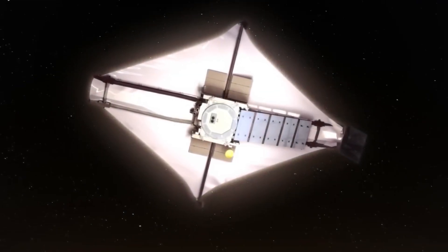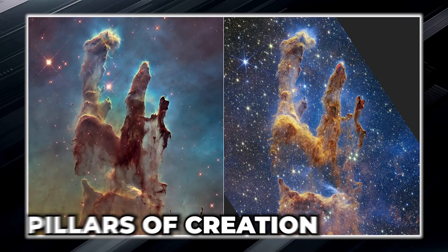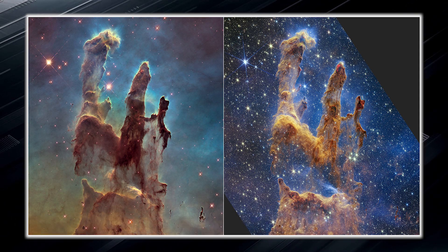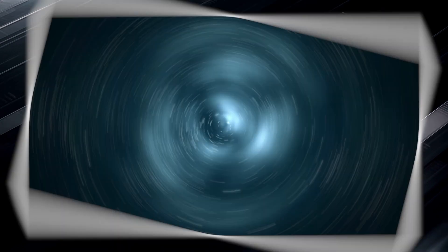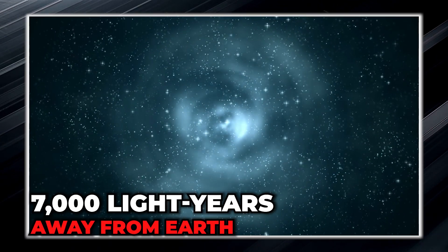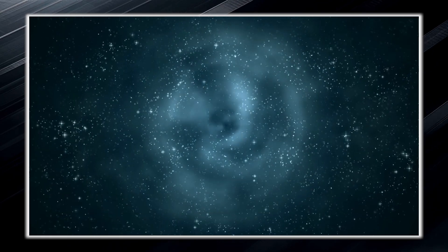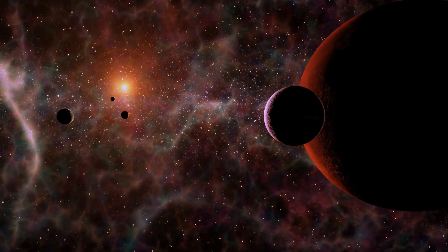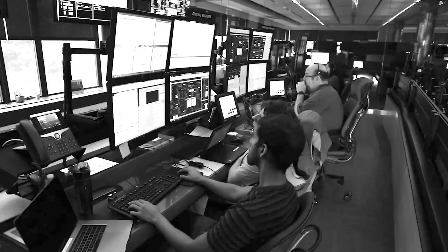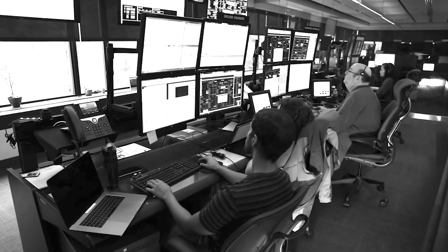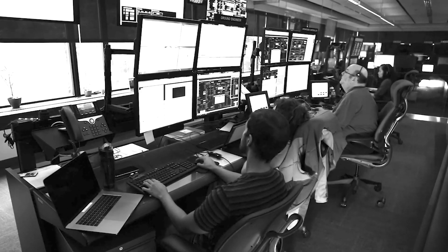When the James Webb turned its instruments toward the iconic Pillars of Creation, it captured the famous dust clouds in incredible detail. These pillars are located in the constellation Serpens, about 7,000 light years away from Earth. The Pillars of Creation are part of the Eagle Nebula, large clouds of gas and dust that were first photographed by the Hubble Space Telescope in 1995. Since then, the extraordinary beauty of the pillars has been revealed.